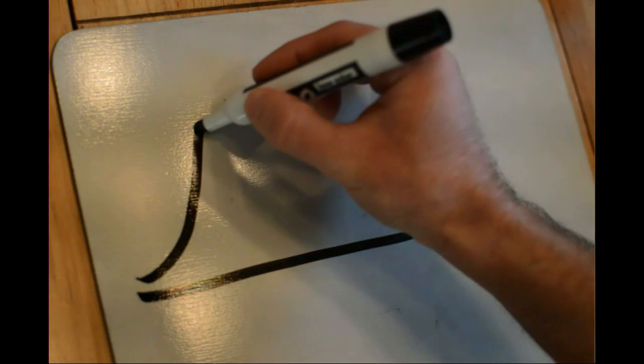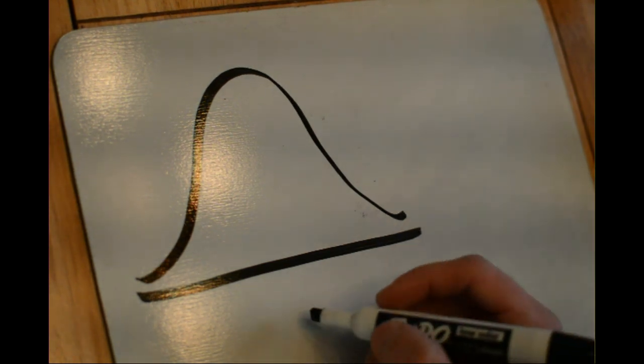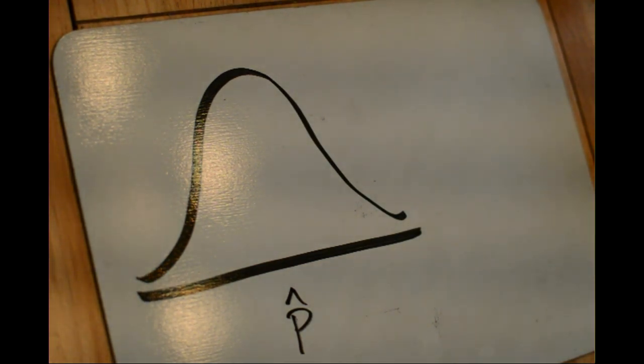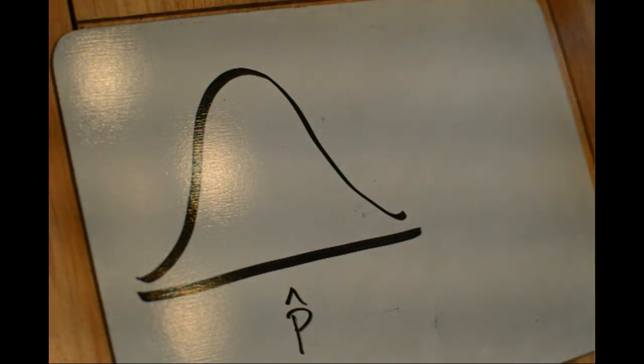We're going to take a look at the sampling distribution of p-hat, the predicted proportion for some population. The sampling distribution is the distribution of a certain statistic for a certain population, taken out of a sample size n. So if we were able to take all samples of size n from a population and calculate all the different p-hats we would get, this is how those would be distributed. We call that the sampling distribution.